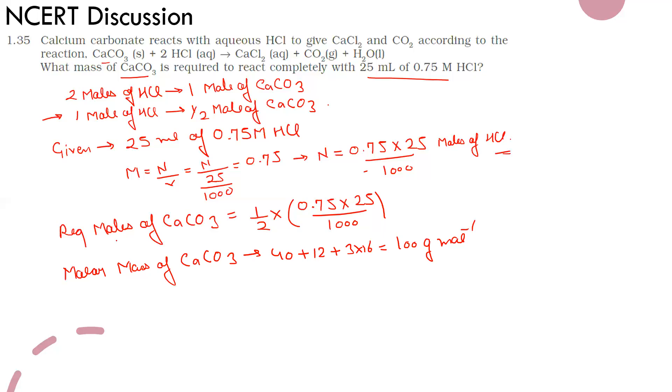Now, this is the moles of CaCO3 that we have. The mass of CaCO3 will be equal to 100 times the moles of CaCO3. This is 100 times 1/2 times 0.75 times 25 divided by 1000. Solving this, we get 0.9375 grams or this can also be written as 0.94 grams.